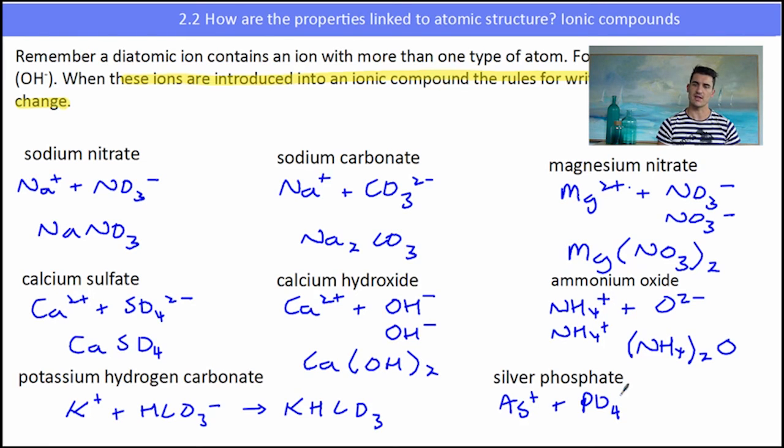Silver phosphate. Silver is a one plus ion. Phosphate is a three minus ion. So that means I'm going to need three silvers. Don't need brackets because it's just a monoatomic ion. Ag3PO4.